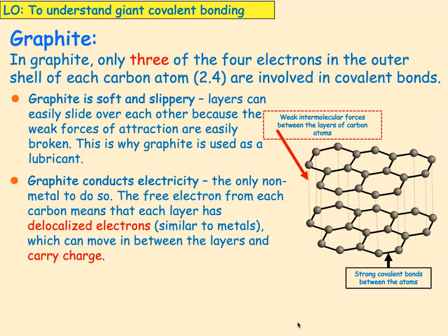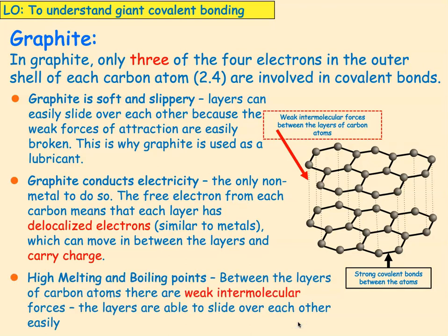Graphite conducts electricity and it's the only non-metal that's able to do that. The free delocalised electron is able to move in between the layers and carry charge throughout. It has a high melting and boiling point because between the layers of carbon there's a weak intermolecular force, and you would also have to break all of those covalent bonds in order to melt it — meaning you need a lot of energy.